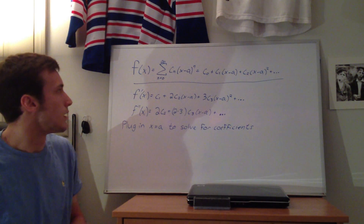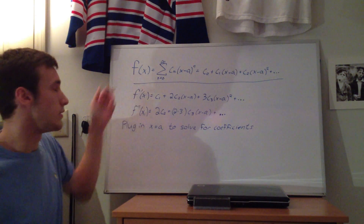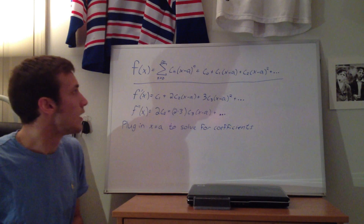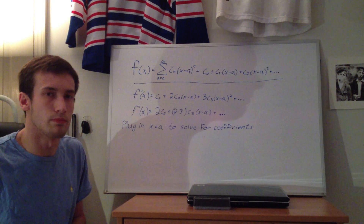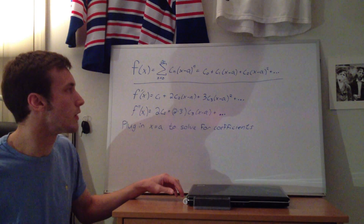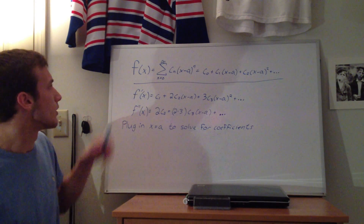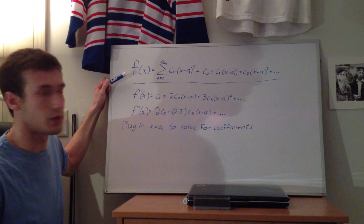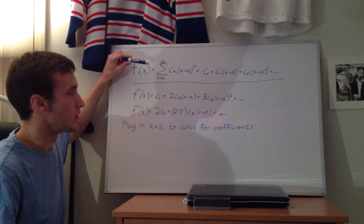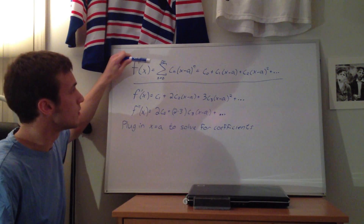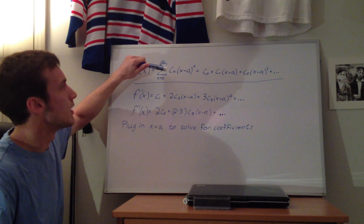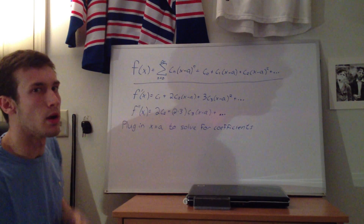This top equation is the equation for a power series that's centered at a value a. The function is a function of x, and it can be expressed with summation notation: the summation from n equals 0 to infinity of some coefficient c sub n times the value x minus a to the power n.